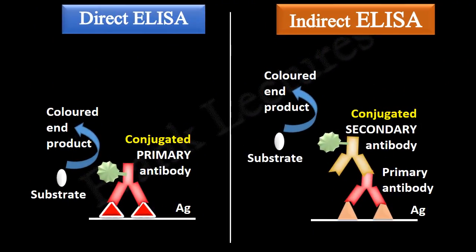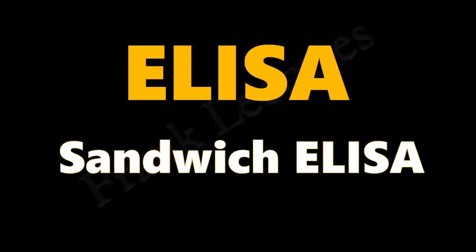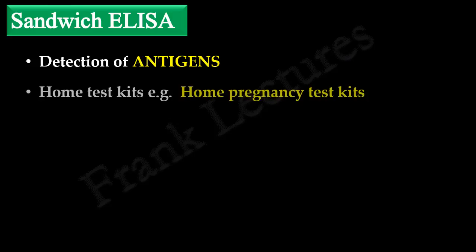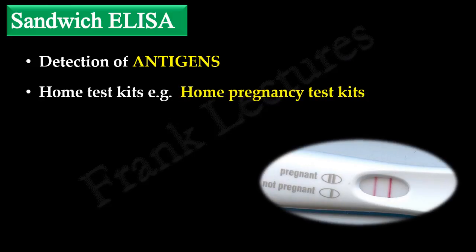We have covered direct and indirect ELISA. I hope you now understand the basic difference between these two types of ELISA. Today we will study the most commonly used format of ELISA, which is sandwich ELISA. Sandwich ELISA is used for the detection of antigens. Its most popular application is point-of-care testing and home test kits, such as home pregnancy test kits.